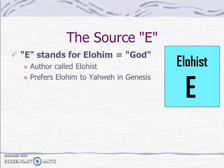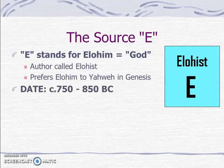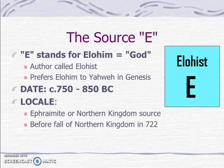The E source stands for Elohim, meaning God. The author is called the Elohist and is called this because this author prefers Elohim to Yahweh as his preferred designation for God. Wellhausen dated this source to 750 to 850 B.C., a little later than J. The locale would be Ephraim, which is another term for the Northern Kingdom — E is for Ephraim — and he dates this before the fall of the Northern Kingdom to the Assyrians in 722 B.C.